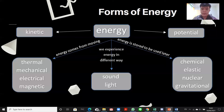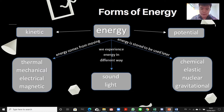There are some classifications of energy. For kinetic energy, we have thermal energy which is the energy produced by the moving particles. Then we have mechanical energy which is the energy of objects in motion. Then electrical energy is produced when there is a moving charge through the wire. And lastly, magnetic energy is the energy causing push or pull.